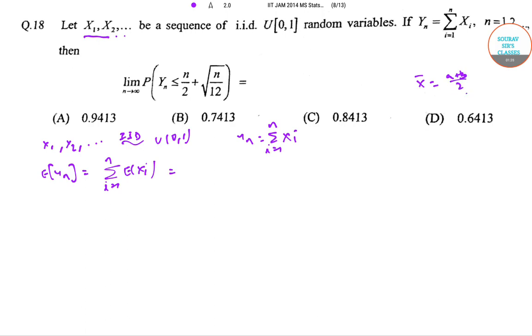So over here it would be (0+1)/2 equals 1/2. So summation of 1/2, i ranging from 1 to n, equals n/2.